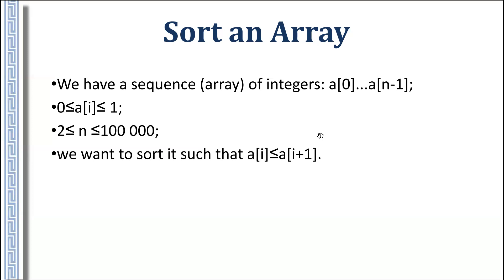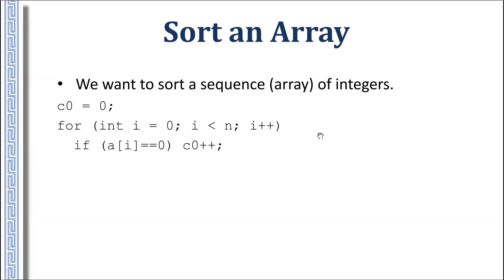How to do it? In fact, we can use this special property that all numbers can be only 0 or 1. We can just count number of zeros and count number of ones. You can compute it like n minus c0 after computing c0. After that, we know how many zeros should be in this sequence. We write this number of zeros in the beginning - c0 times we write 0, and after that, all rest part of the array should be filled by 1.